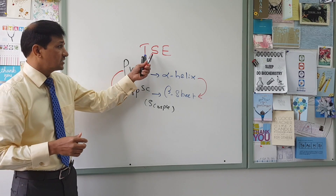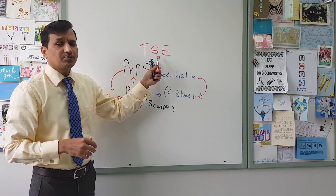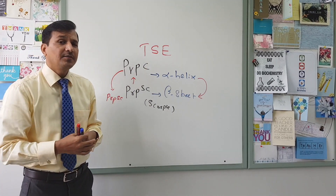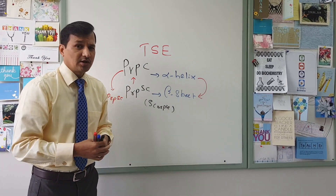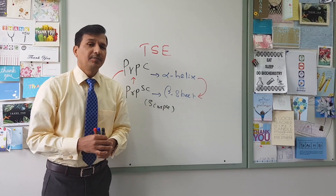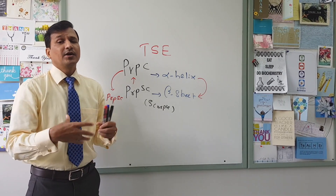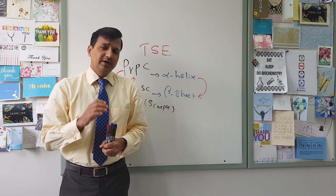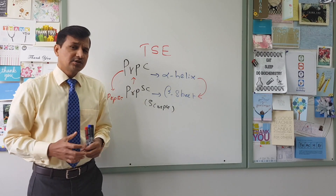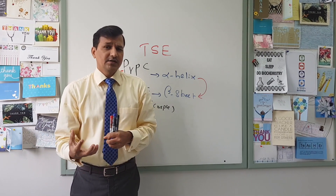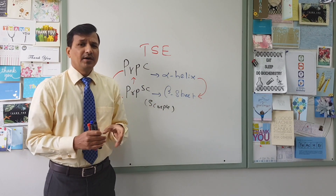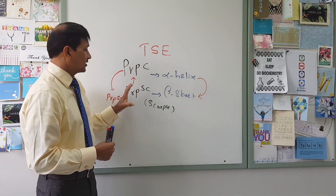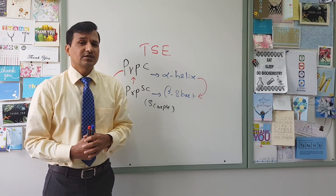That is why prion disease is also referred to as transmissible spongiform encephalopathy — TSEs. Prion diseases are classified as TSEs. Transmissible means this disorder can be transmitted from one person to another. One can get prion disease by eating the meat of a cow that died because of mad cow disease. This is how prion disease is caused — it is an infectious protein. Previously it was thought to be a bacteria, virus, or fungi, but later it was determined that this disorder is caused by an infectious protein.